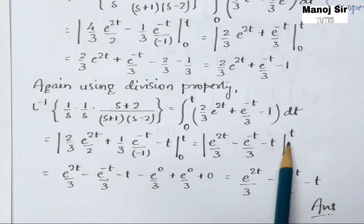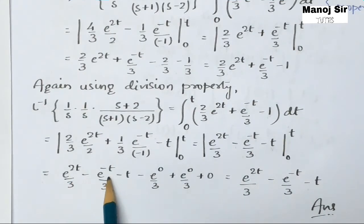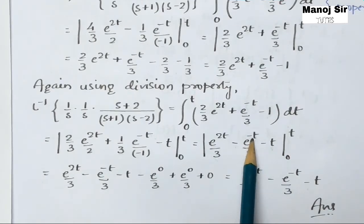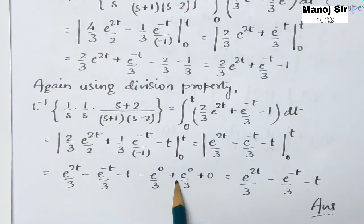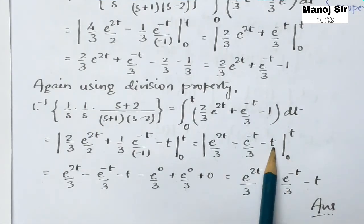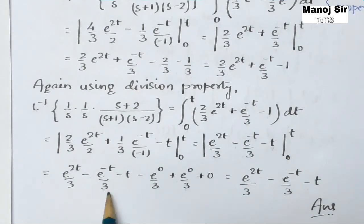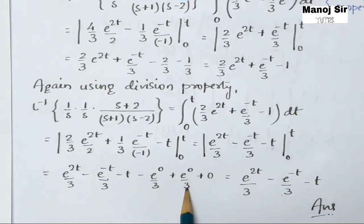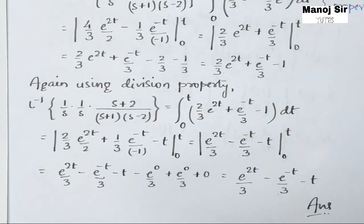Applying limits: upper limit gives e^(2t)/3 - e^(-t)/3 - t; lower limit gives -e^0/3 + e^0/3 + 0 = -1/3 + 1/3 = 0, so these two terms cancel. The final answer is: e^(2t)/3 - e^(-t)/3 - t. Thank you for watching this video.